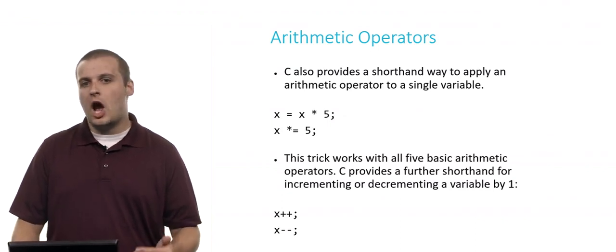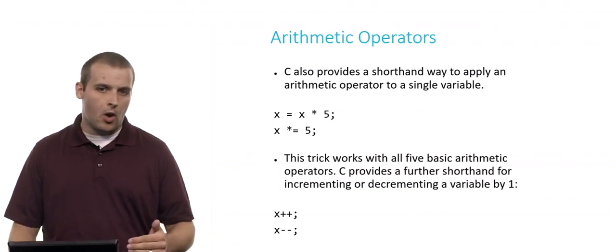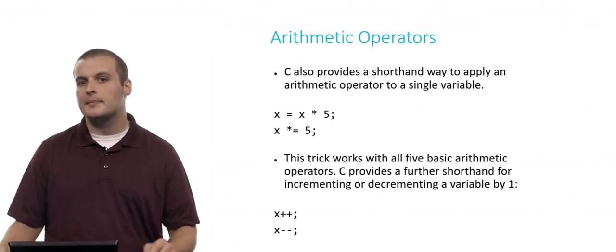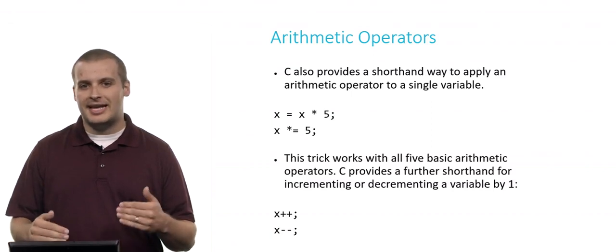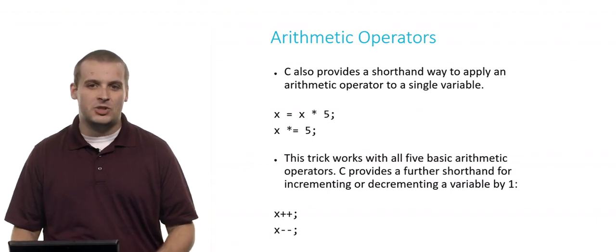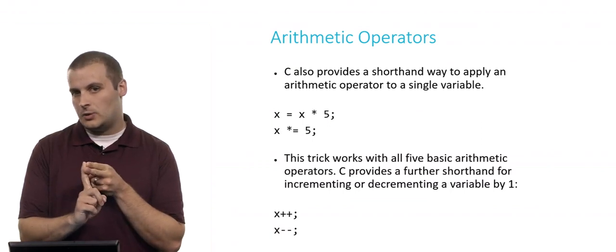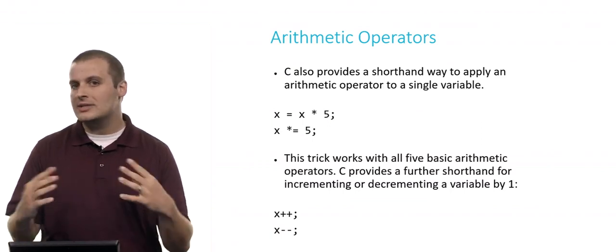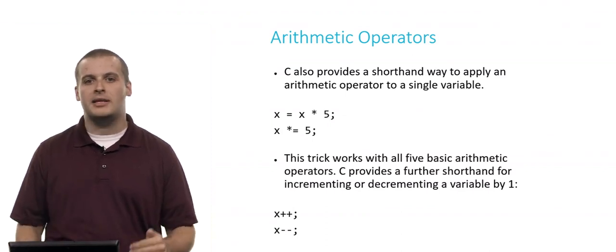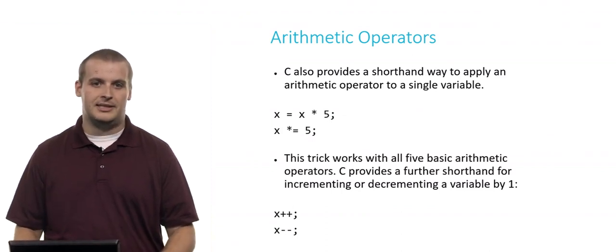There's also something that's so common in C that we've decided to refine that even further. Incrementing a variable by 1 or decrementing a variable by 1 is such a common thing, especially when we talk about loops a little later on, that instead of saying something like x plus equals 1 or x equals x plus 1, we've even shorthanded that to x plus plus. So x equals x plus 1, x plus equals 1, and x plus plus all do the same thing. They all increment x by 1. But that incrementing and decrementing by 1 is so common that we have plus plus and minus minus that allow us to shorthand that even further.